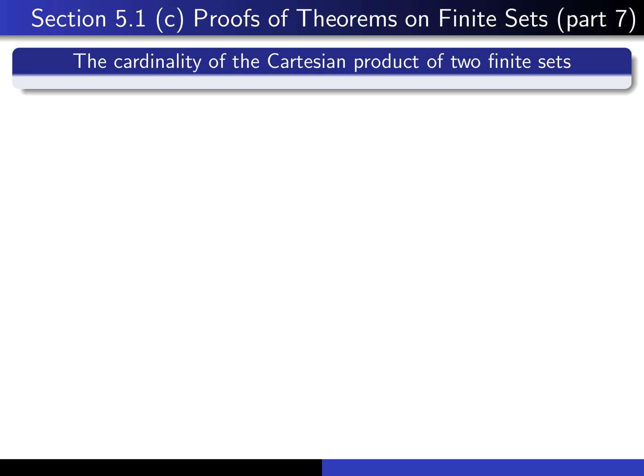This is part 7 in our series of lectures on the proofs of theorems on finite sets. In this lecture, we're going to talk about the cardinality of the Cartesian product of two finite sets.